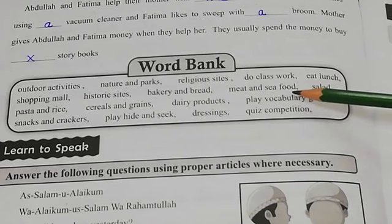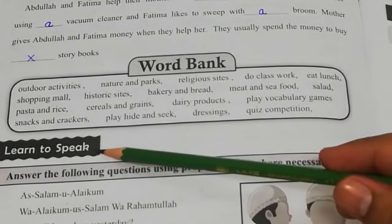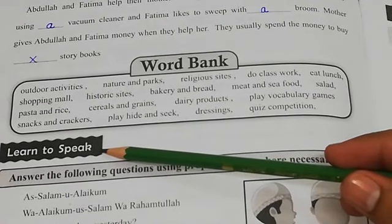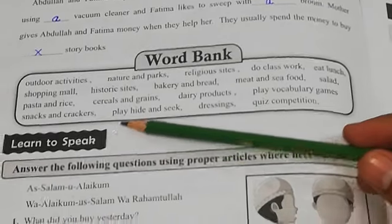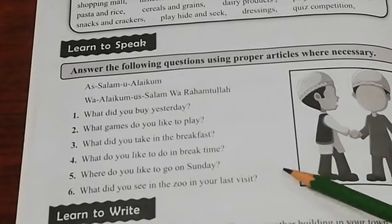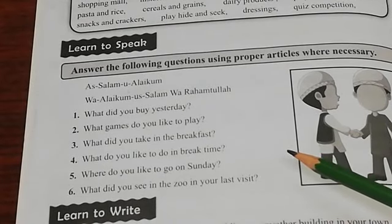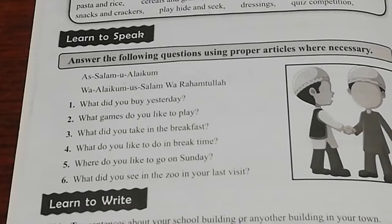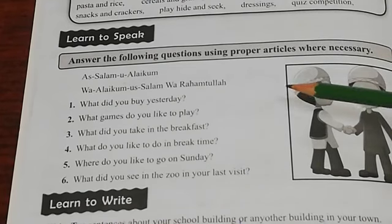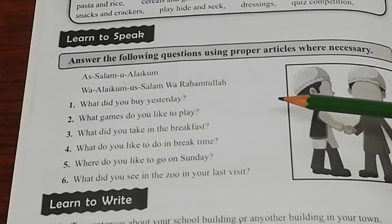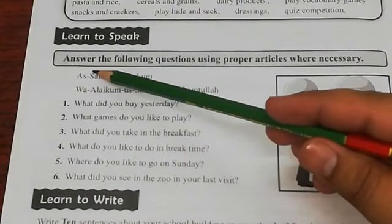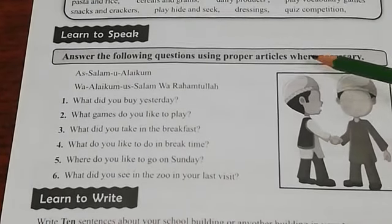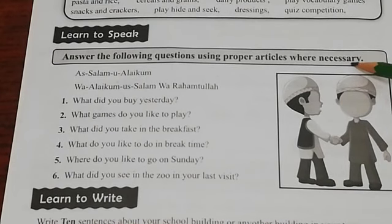This word bank will be helpful for us when we start our learn to speak activity. It's a very important activity. Before starting this activity, I have a suggestion for you, dear students. I want you to find a partner if you want to conduct this activity effectively. The partner may be your father, your mother, your sister, or your brother at home. Now I'll demonstrate the whole activity for you, and you will follow the way I perform it. Look at the instructions for learn to speak: answer the following questions using proper articles where necessary.